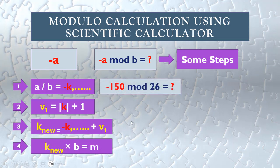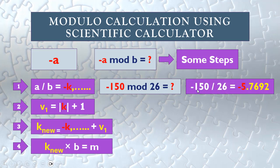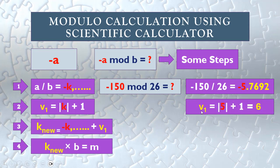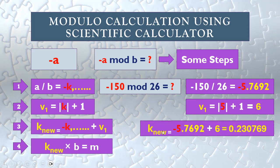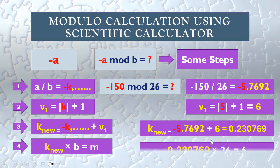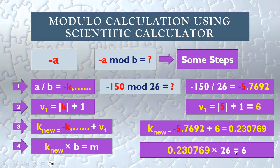For example, negative 150 mod 26: negative 150 divided by 26 equals negative 5 and some decimal numbers. The absolute value of 5 plus 1 equals 6. The new k equals the first result plus 6. We take that number and multiply by 26.